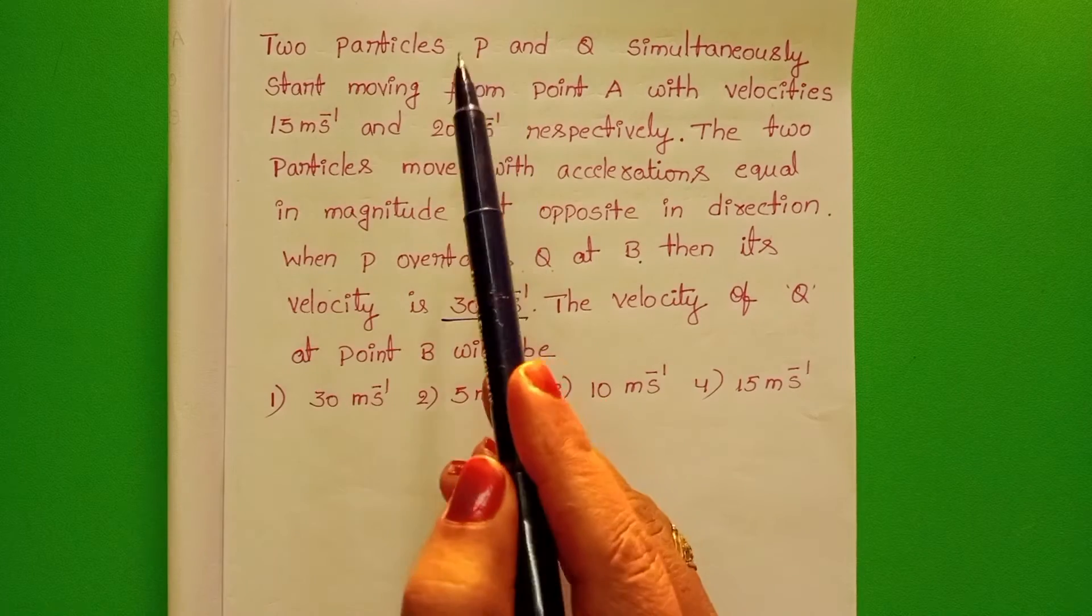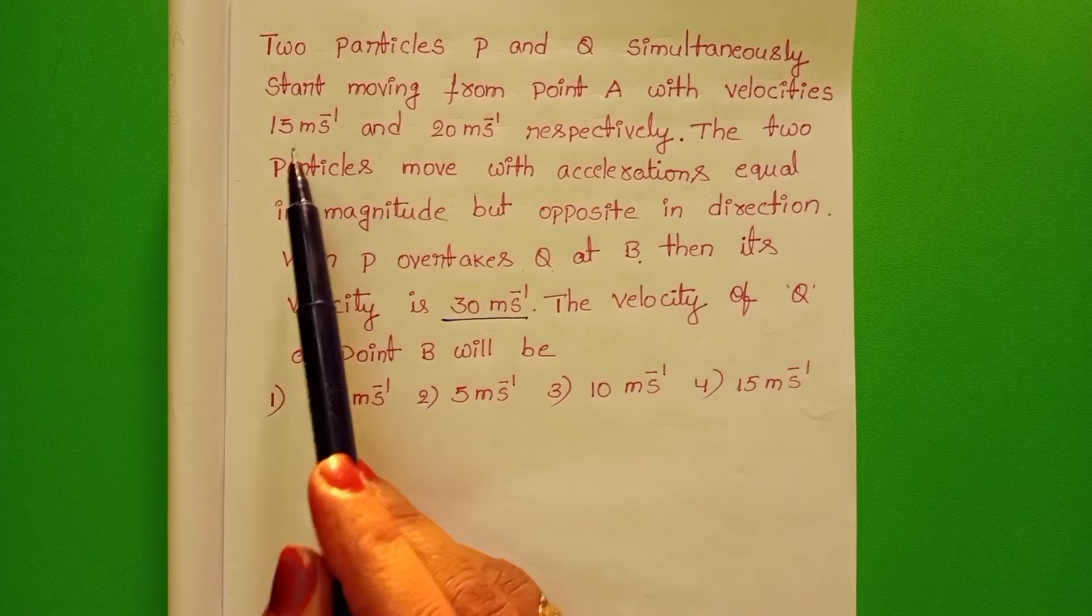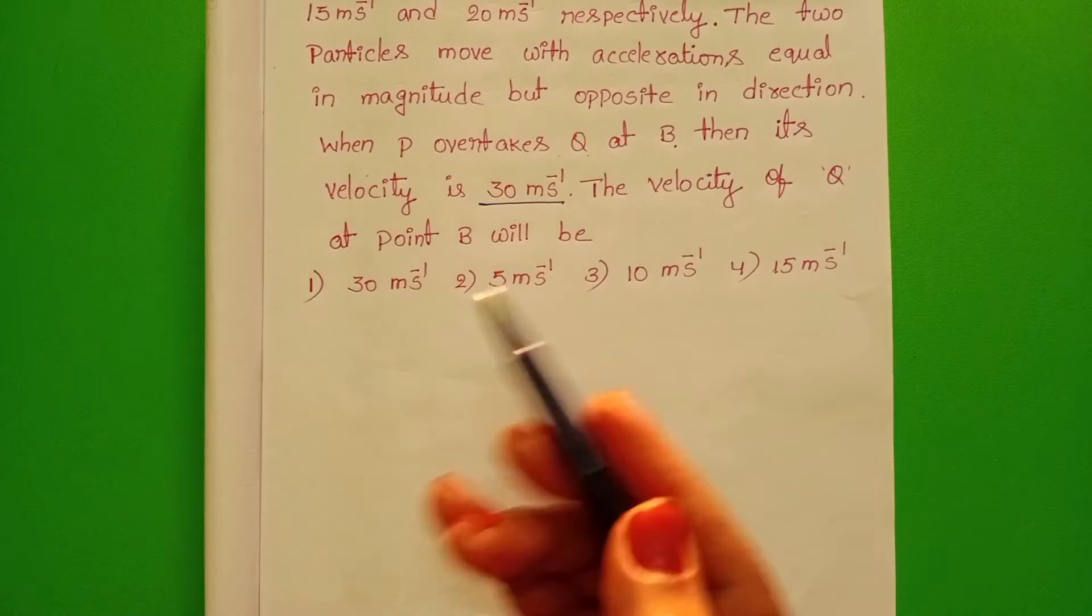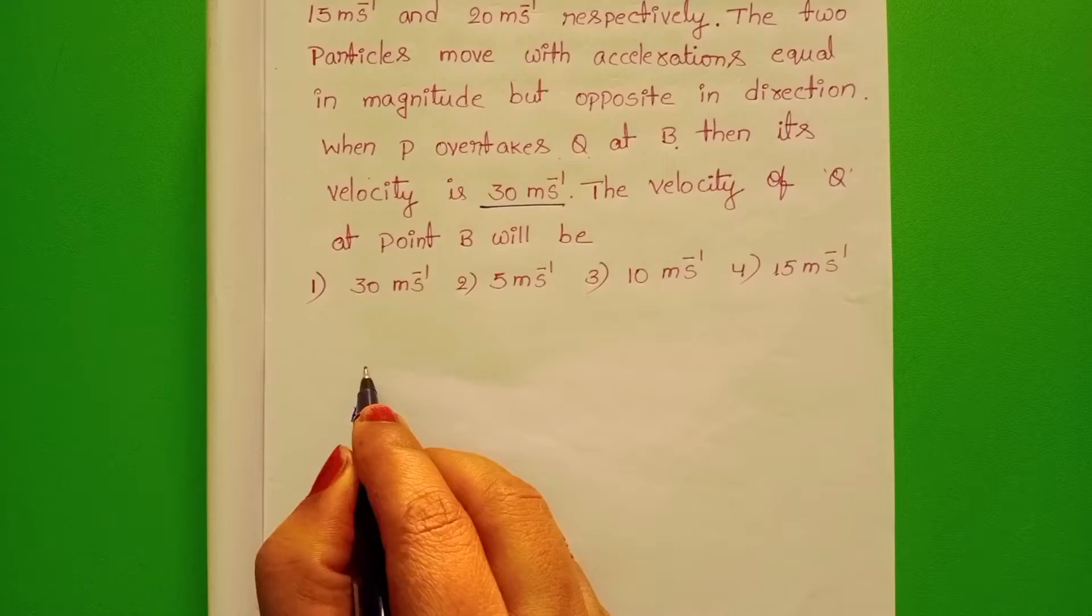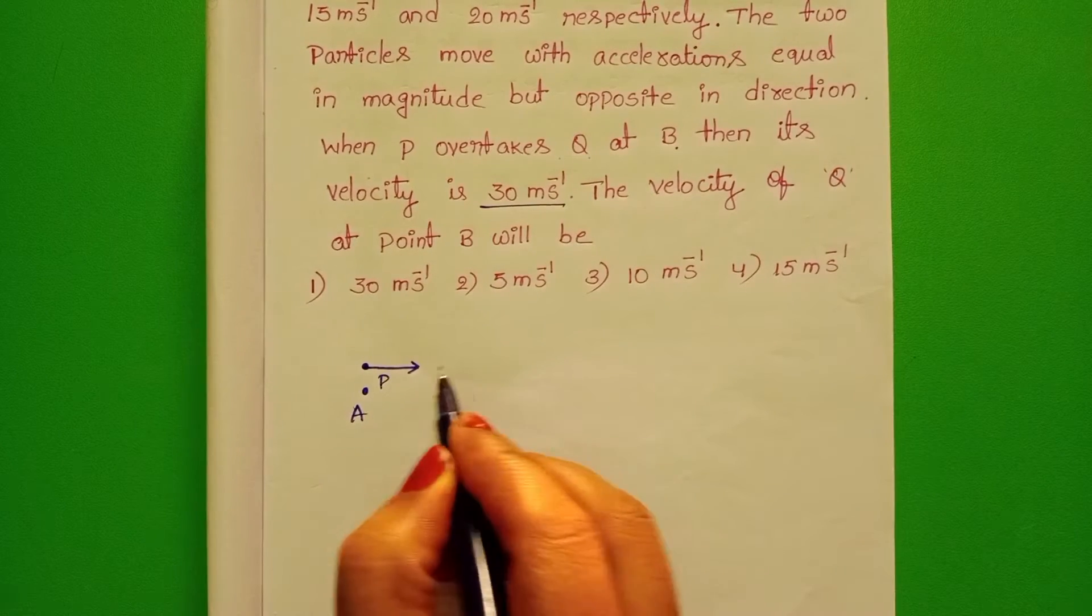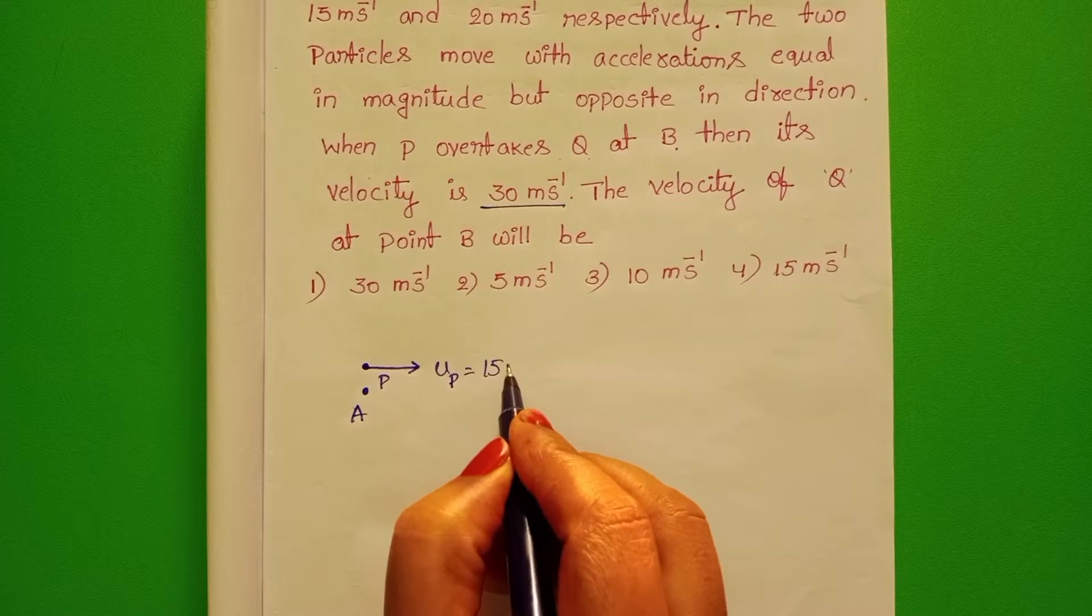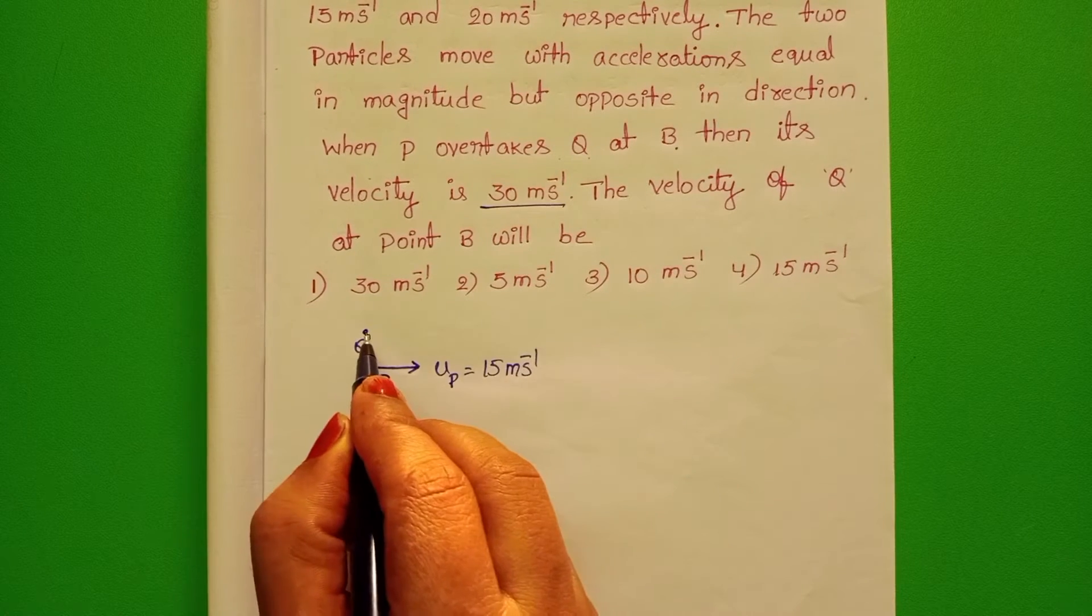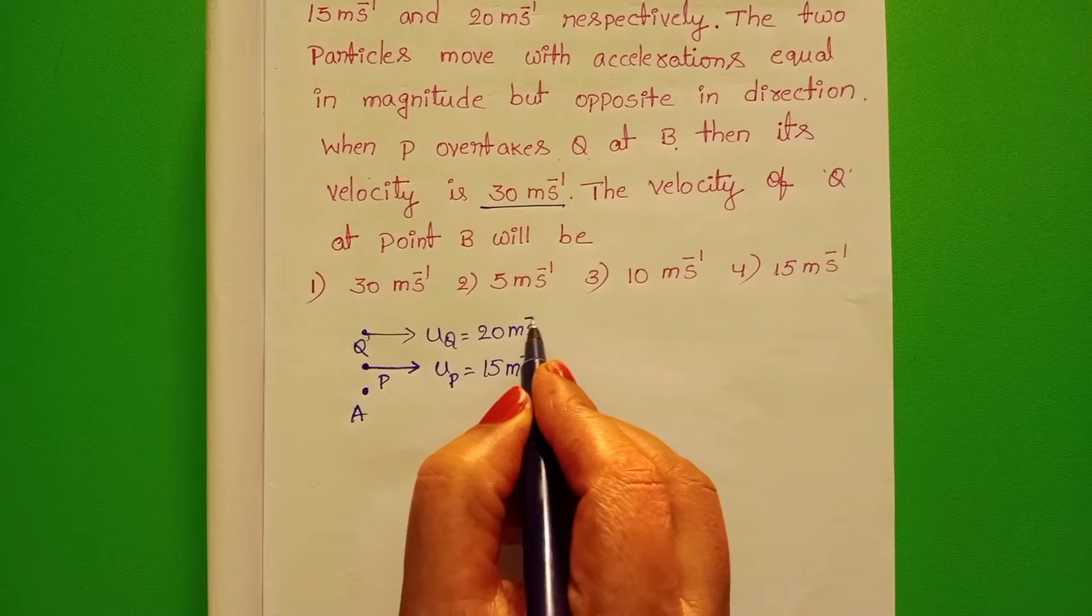In the given question, P and Q, these two particles start from point A with velocities 15 m per second and 20 m per second. Point A, this is the direction of particle P with initial velocity 15 m per second and second particle with initial velocity 20 m per second.